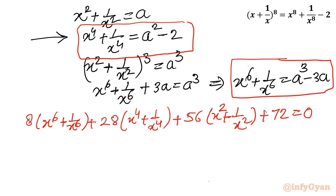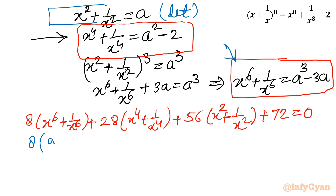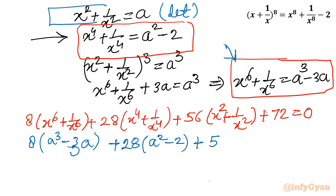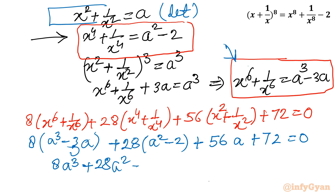Now let us substitute the values. x^6 + 1/x^6 = A^3 - 3A and x^4 + 1/x^4 = A^2 - 2, and x^2 + 1/x^2 = A. After substituting and simplifying, you will get: 8A^3 + 28A^2 + 32A + 16 equals 0.